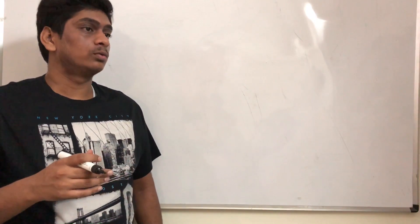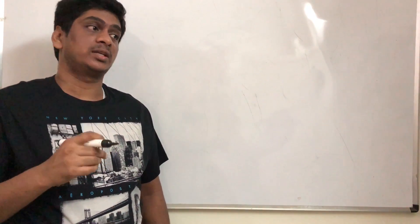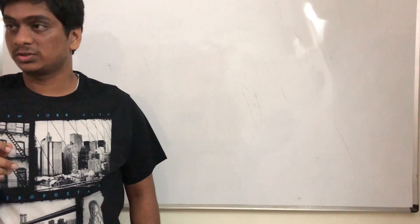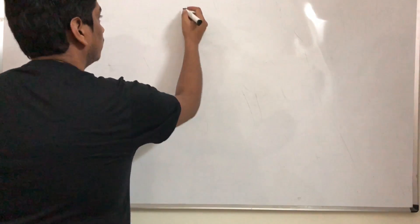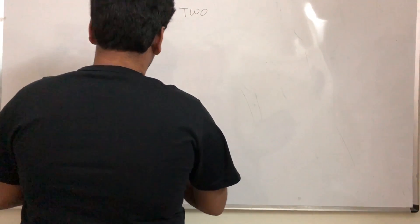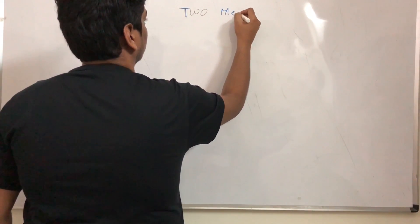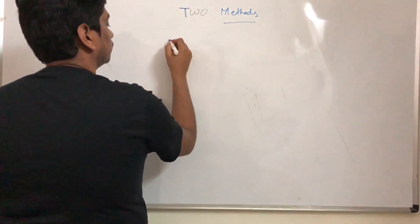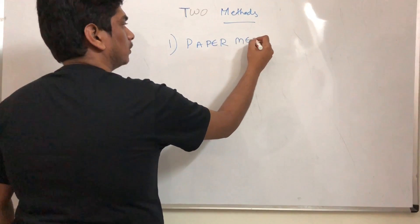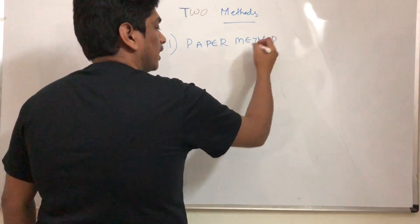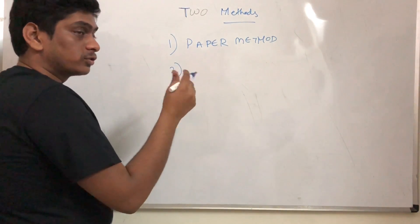Now that we have seen how addition and subtraction are done, we will see how multiplication is done for binary numbers. Multiplication can be done in two methods: the first is called the paper method, and the second is called the computer method.